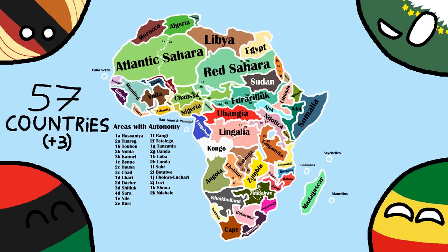Some countries have a dotted line going through them. This is because I originally had an independent country there, but since they could not survive — either surrounded by deserts, rainforests, or double landlocked — I merged them with a similar enough neighbor and made the original country an autonomous area, which there is also a list of. You could say they are countries that did not quite make the cut.